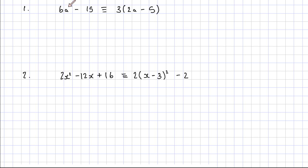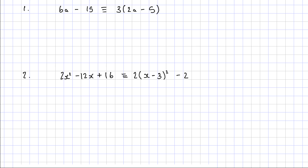I can have any number for a and it will always be the same on both sides. So let's try a different number, let's try 5. So 6 times 5 is 30, take away 15 is 15. Then 2 times 5 is 10, take away 5 is 5, and 3 times 5 is 15.